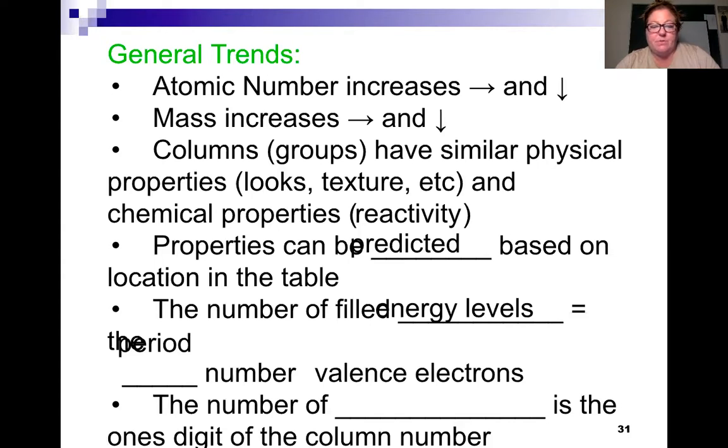Properties can be predicted based on the location on the periodic table. The number of filled energy levels equals the period number, and the number of valence electrons is the ones digit of the column number. So we talked about this last time, where everybody in row one has one energy level. Everyone in row two has two energy levels, so it can hold up to eight electrons. And then row three has three energy levels. And then we also talked about how we can determine how many valence electrons, electrons on the outer energy level, there are based on what column it's in. Group one has one, group two has two. We skip the transition metals, then we go to group 13 has three, group 14 has four, 15 has five, 16 has six, 17 has seven, and 18 has eight valence electrons.